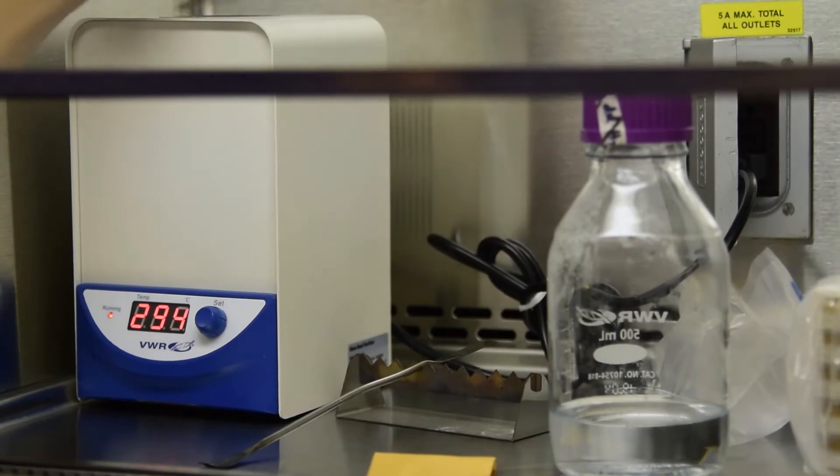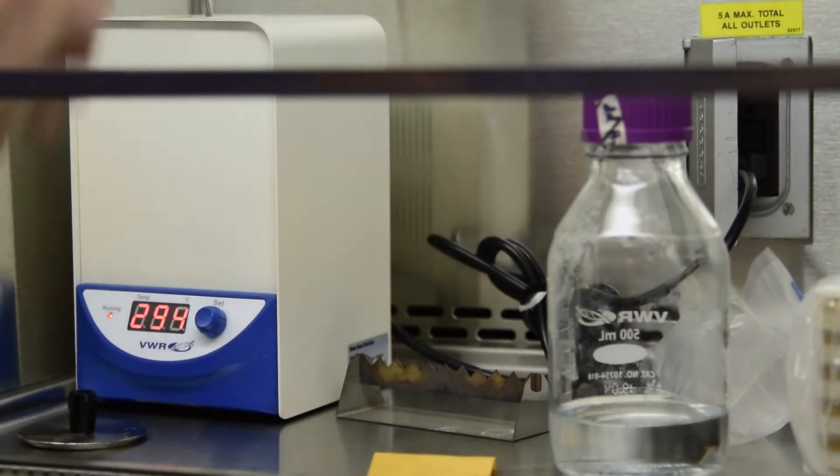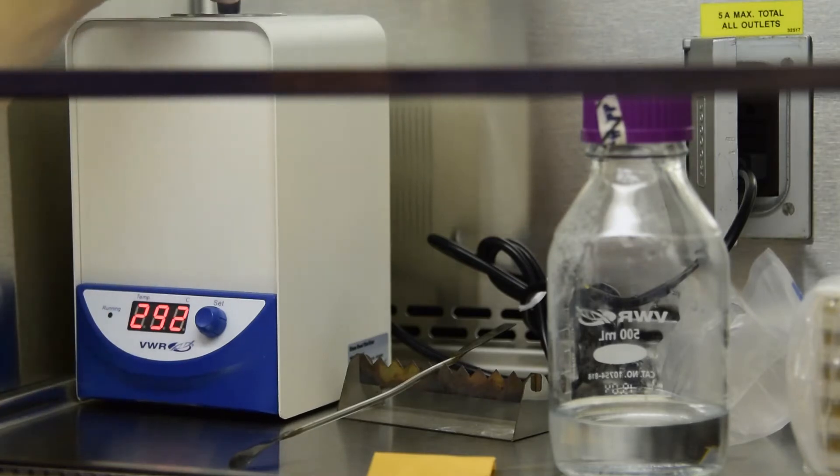Once the sterilizer is at temperature, place your spatula in for at least 10 seconds, then let cool on the metal rack. Replace the lid to retain heat.